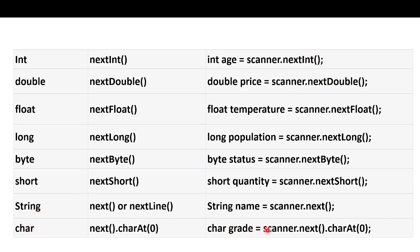For string, we can use either next() or nextLine() - that difference we will discuss. For character, we need a single character. For string we use Scanner.next(). For character, we use charAt(0). charAt(0) gives the first character, charAt(1) gives the second character. So this is the general format.